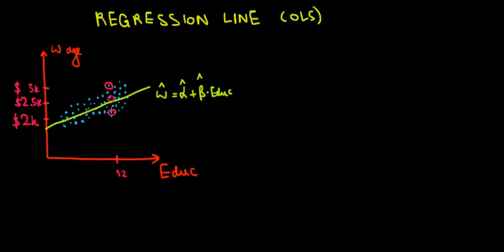education of 12 years, we have these different blue dots, different possible results. So we could have either $2,000 a month, $2,500 a month, or $3,000 a month. So why